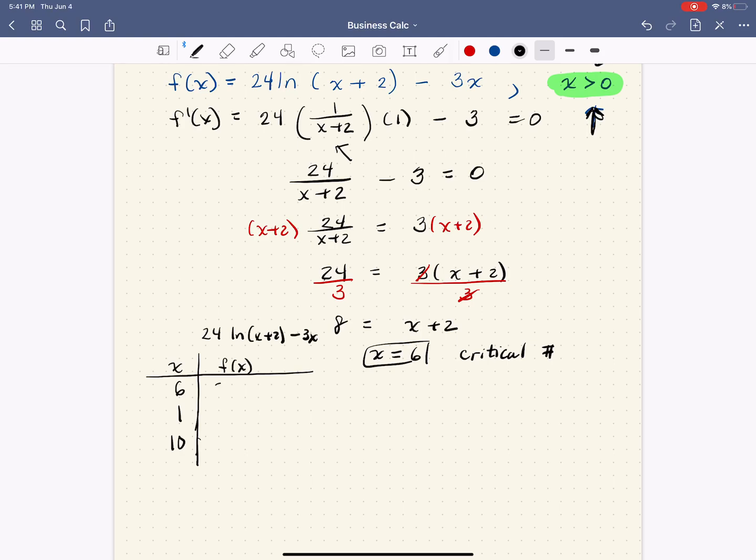So if I substitute 6, I get 24 natural log of 8 minus 18. And I don't know about you, but I don't know the approximate value of that, so we're going to figure that out with a calculator, but at least we're setting it up.